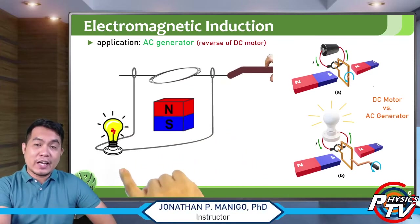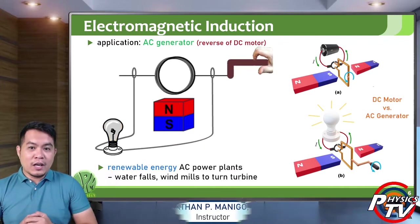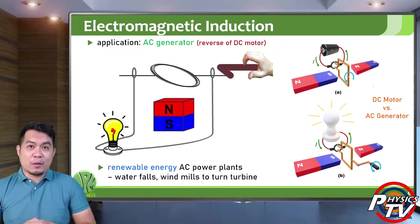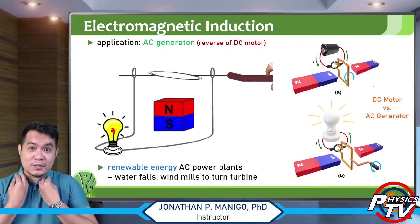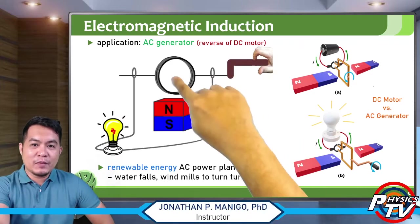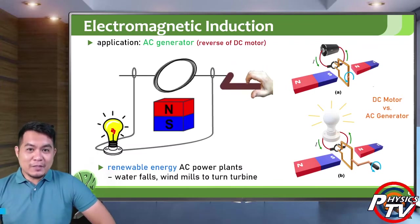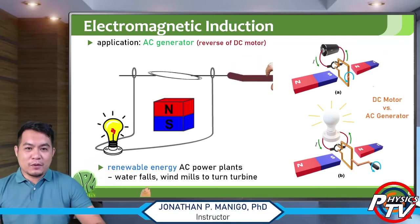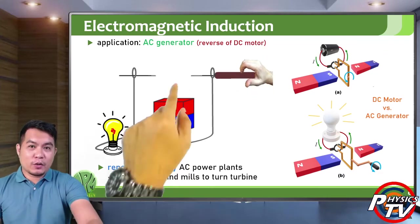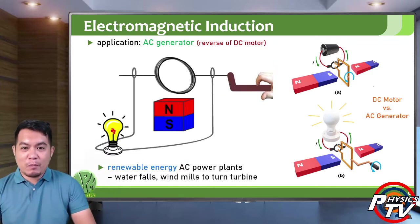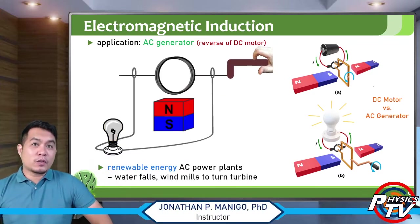Most of our renewable AC power plants are near waterfalls. Instead of manually turning the coil, you can use gravity, a waterfall, or a windmill — you can use the wind to turn the coil. Specifically in power plants, it is the turbine that rotates to generate current in the circuits.